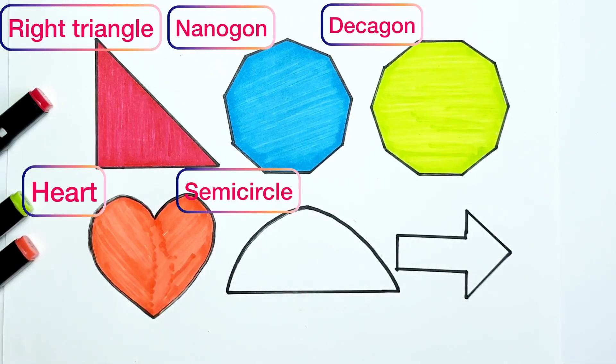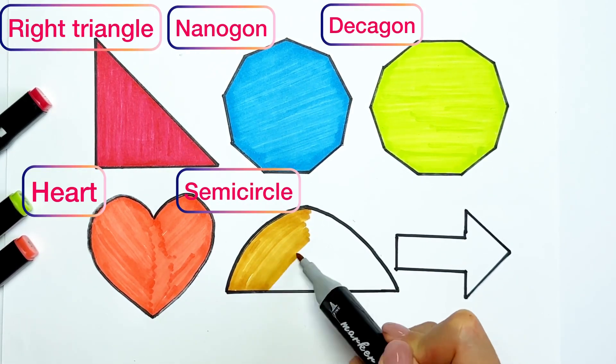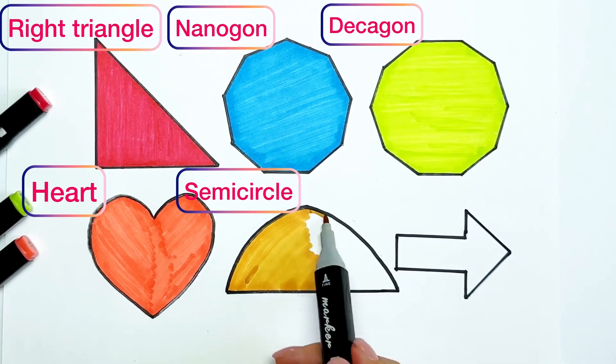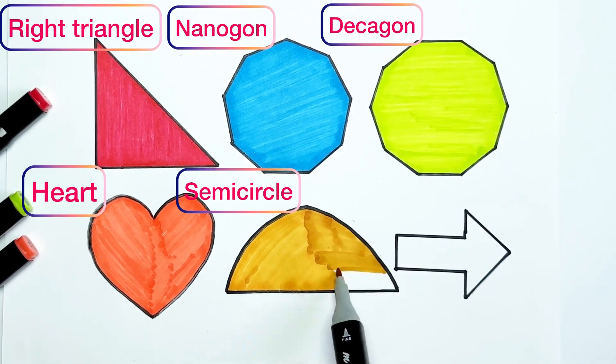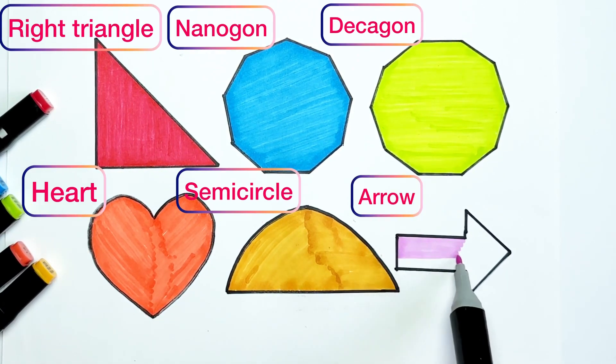Dark yellow color for semicircle. And pink color for an arrow.